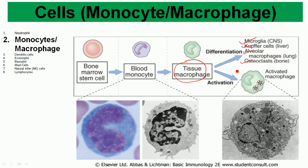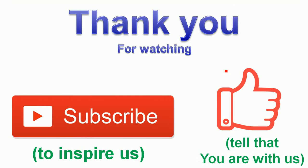These are the neutrophils and monocytes. In the next video, I will try to get more insight into the dendritic cell, mast cell, natural killer cell, and lymphocyte. Thank you for watching — please subscribe and like.